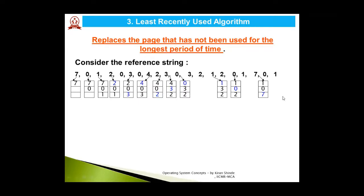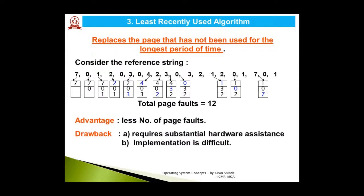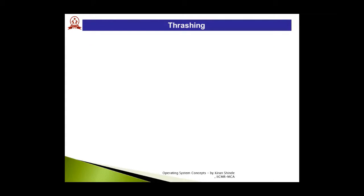Continuing with LRU logic, the total number of page faults comes to 12. Comparing all three algorithms on the same reference string: FIFO gives 15 page faults, LRU gives 12, and Optimal gives 9. We conclude that Optimal page replacement yields the fewest page faults compared to both FIFO and LRU.